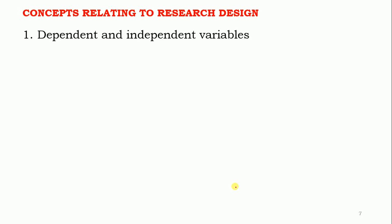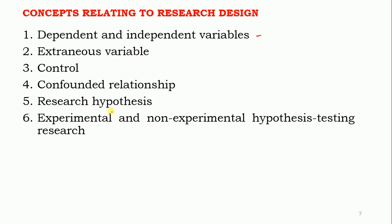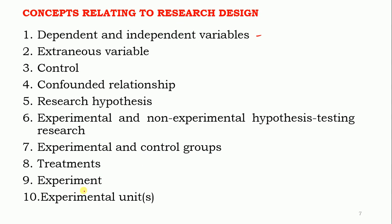There are some concepts relating to research design which we should study: dependent and independent variables, extraneous variable, control, confounded relationship, research hypothesis, experimental and non-experimental hypothesis testing, research, experimental and control groups, treatments, and experimental units. These are various points you must study to understand research design, and we are going to discuss them in the coming lectures. Thank you.